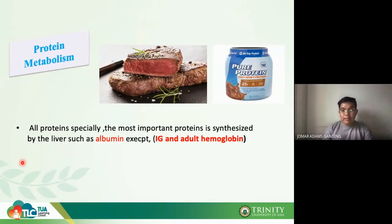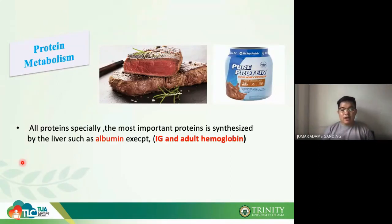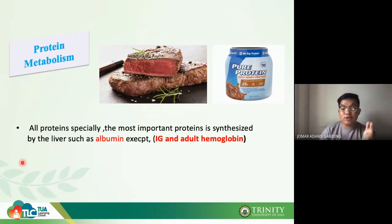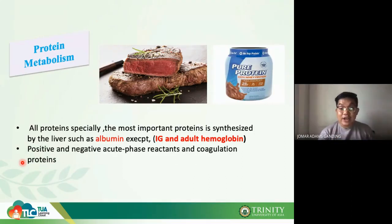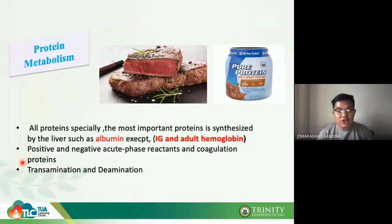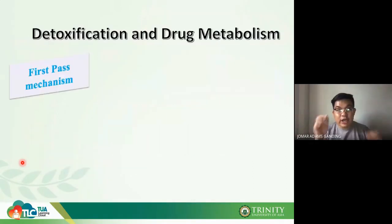In protein metabolism, all important proteins are synthesized by the liver — such as albumin — except for immunoglobulins/antibodies and adult hemoglobin, which is produced in the bone marrow. Albumin is the major general transport protein of your body and is produced by the liver. The liver also produces acute phase reactants (positive and negative), coagulation factors, and carries out transamination and deamination of proteins.